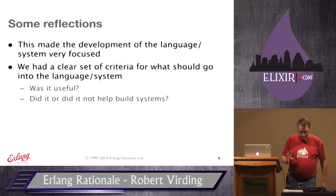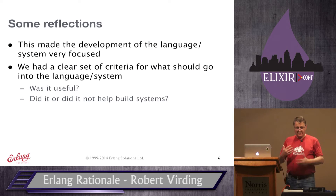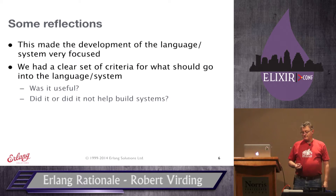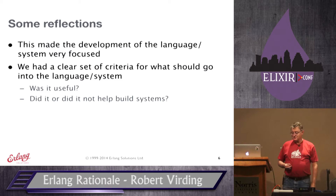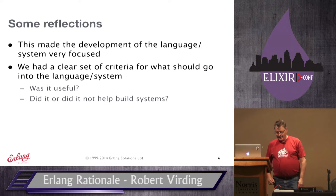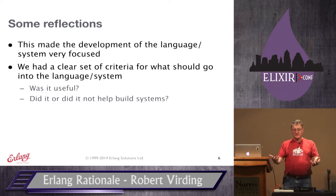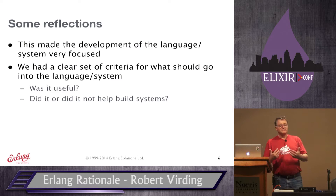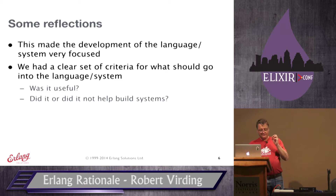Originally it started with Joe Armstrong — a lot of it looks like it does because he was working on a Prolog system with rules for implementing telecoms. The third person was Mike Williams. Joe and I were not very knowledgeable about telecoms — I can make a telephone call, that was about it. Mike had done a lot of telecoms programming. Every time we had a new feature we could give it to the user group and ask 'is this useful?' They'd say yes or no — and no happened quite a few times.